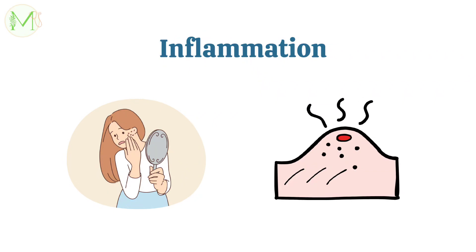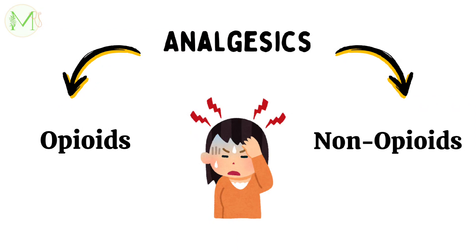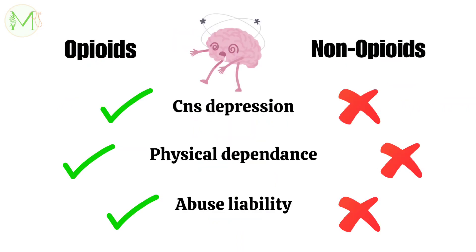Certain group of drugs has the ability to deal with all of the above — yes, they are NSAIDs. Analgesics can be divided into two groups: opioids and non-opioids. Opioid drugs are also known as narcotics or morphine-like analgesics. Non-opioid drugs are also known as non-narcotic, antipyretic, aspirin-like analgesics, or non-steroidal anti-inflammatory drugs. The major difference is that NSAIDs don't produce depression of the CNS, don't produce physical dependence, and have no abuse liability, while opioids have all of these.